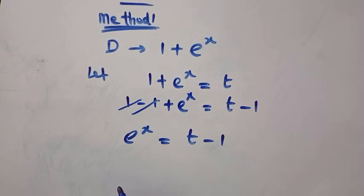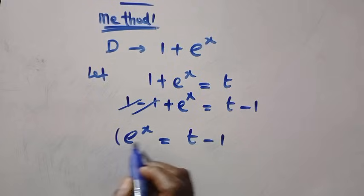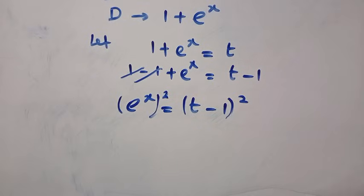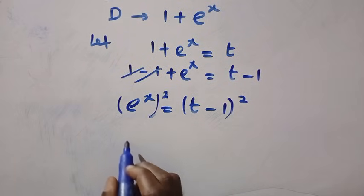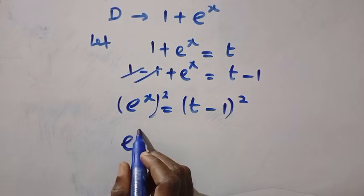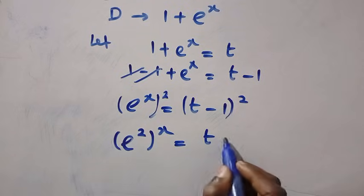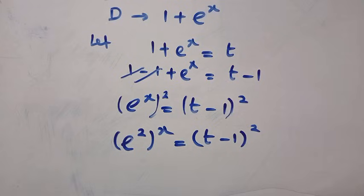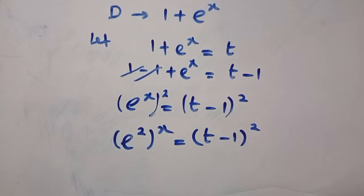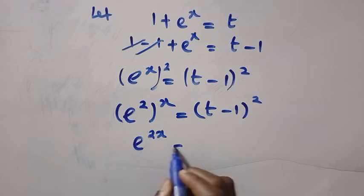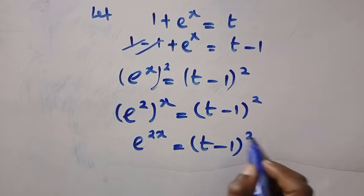Now, on the other side, we have e to the power of x, but we need to get e to the power of 2x. Therefore, we have to take the square of both sides. By squaring both sides and applying the rule of exponents, we get e to the power of 2x equals t minus 1 all raised to the power of 2. Since e to the power of 2x is simply e to the power of x squared, multiplying 2 by x gives us e to the power of 2x equals t minus 1 squared.